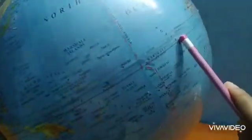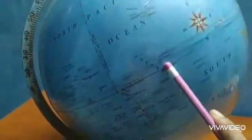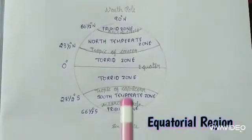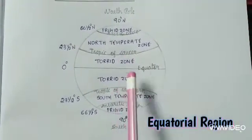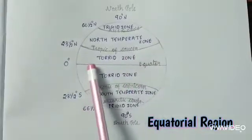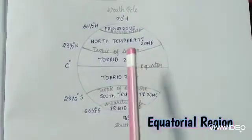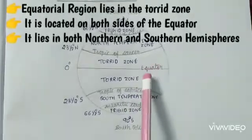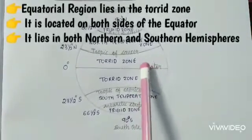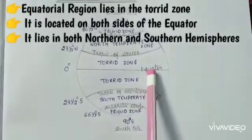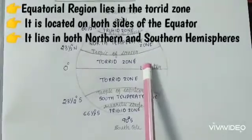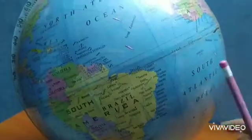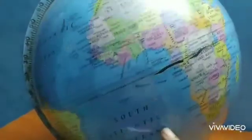We know that the torrid zone is located between the Tropic of Cancer and the Tropic of Capricorn, and the zero degree equator is in the torrid zone. Today we are going to learn the equatorial region. The equatorial region is a region around the equator. It is located on both sides of the equator.